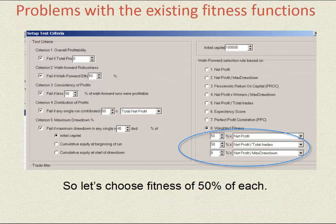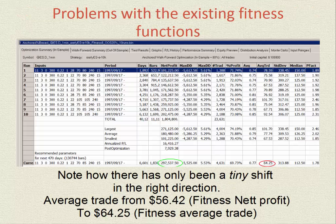The logical thing to do would be to use 50% net profit and 50% average trade. I desperately wanted this feature, and I'm happy to say the writer of the walk-forward optimiser added it in for me many years ago. However, using fitness of 50% net profit and 50% average trade, the only improvement in average trade was less than $8. We need performance halfway between the two fitnesses, but at this stage it seems very elusive.